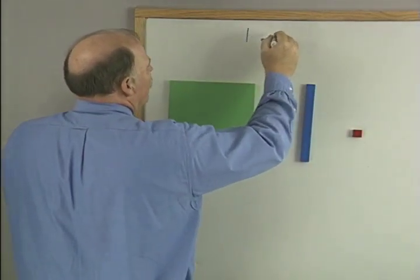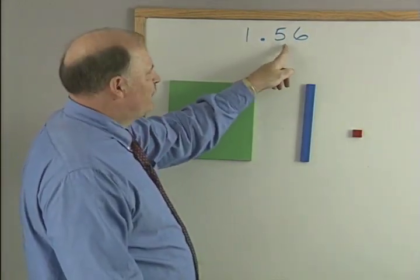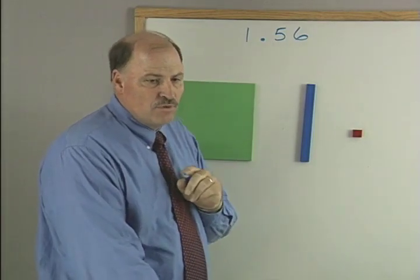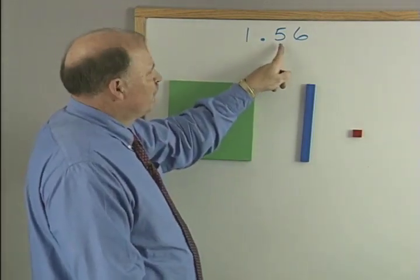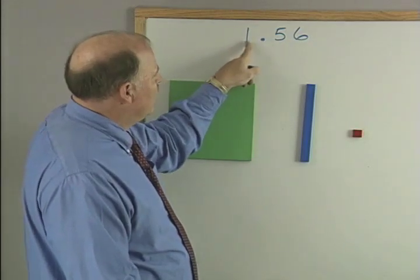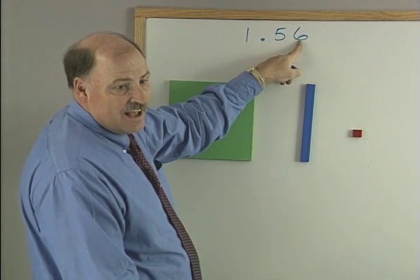1.56 or 1 and 56 hundredths. Now you notice that how you read decimals? You could say like pennies. 56 hundredths, 56 cents. Or you can say 1 and 5 tenths and 6 hundredths, right?